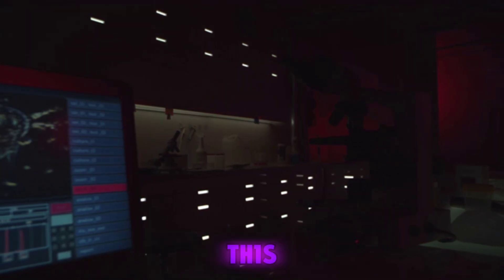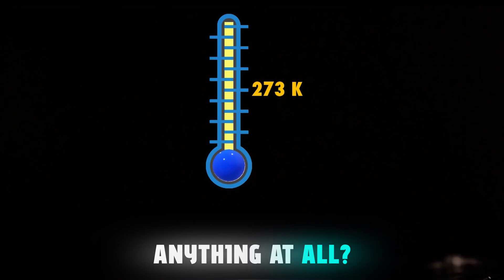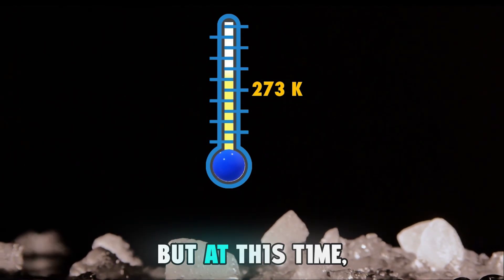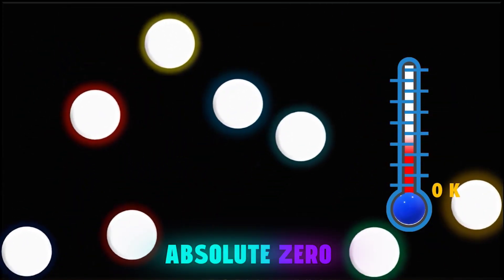But the question is, how did they achieve this remarkable feat? How did they freeze light? The answer is: how do we freeze anything at all? By cooling it, right? But this time, while freezing light, they had to go very near to absolute zero temperature.